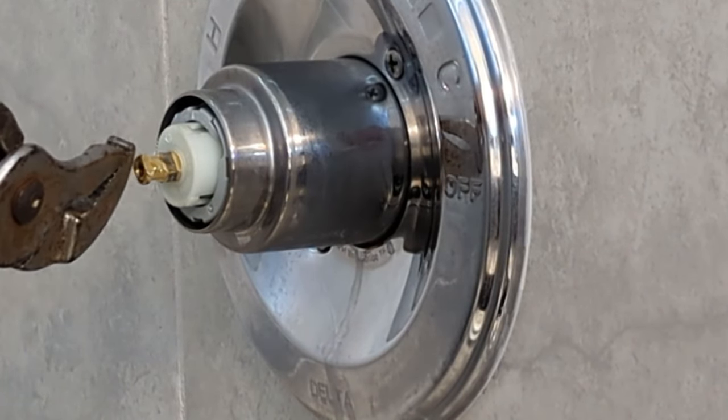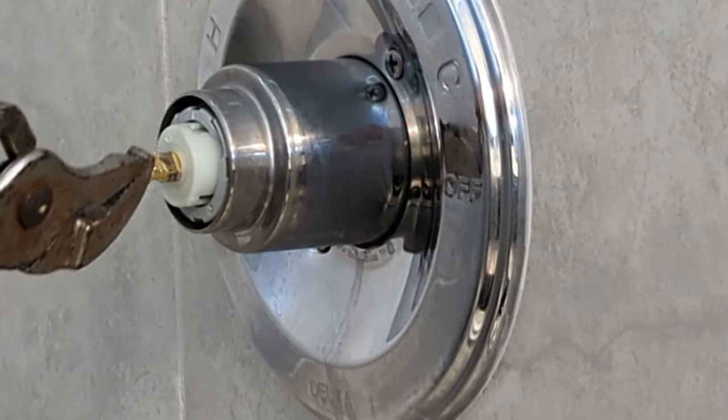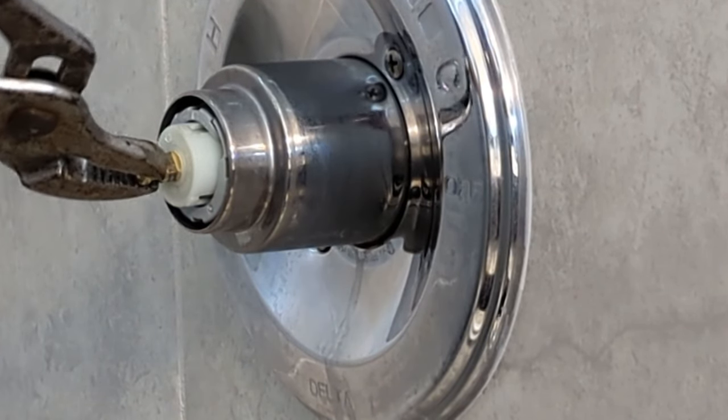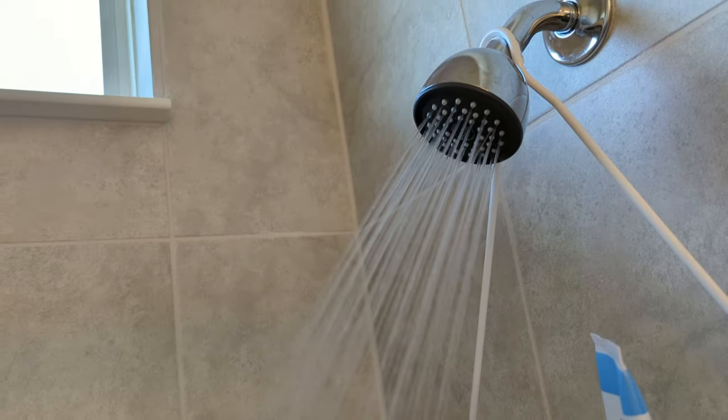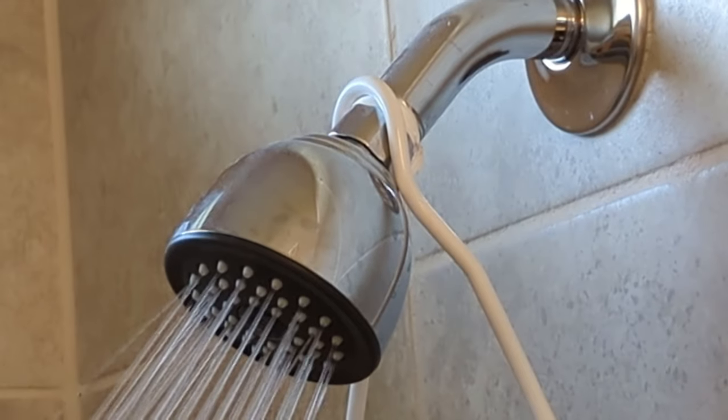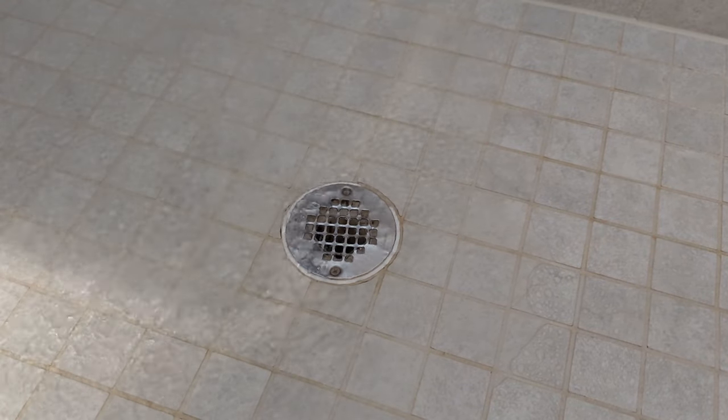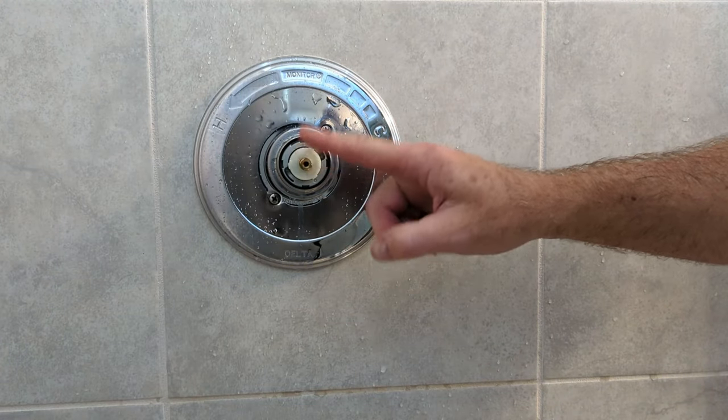Now before we put the handle on, we need to turn this on to make sure that we're getting a lot of hot water out of there. So you can grab your channel locks or a pair of pliers or something, and then just turn it on. And let's see what happens. The water temperature should be good at this point.